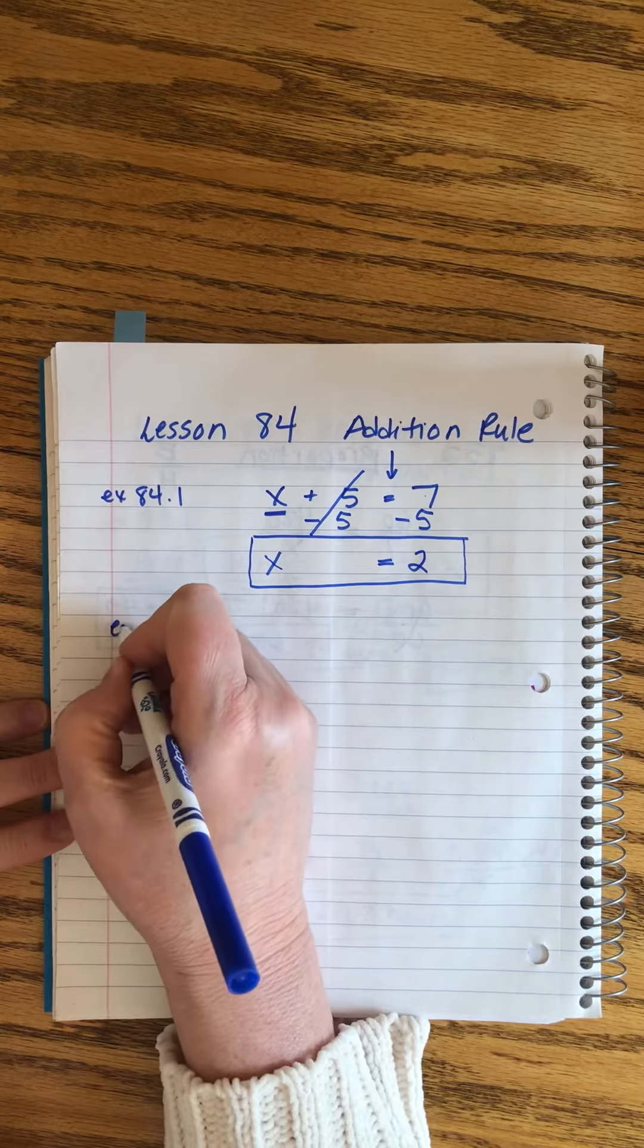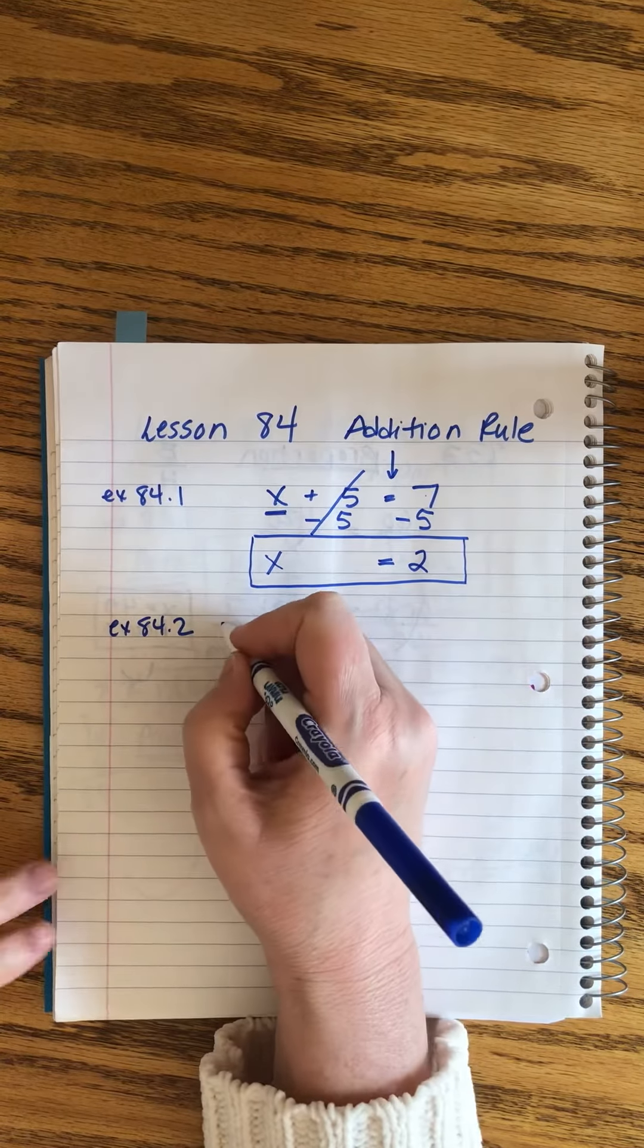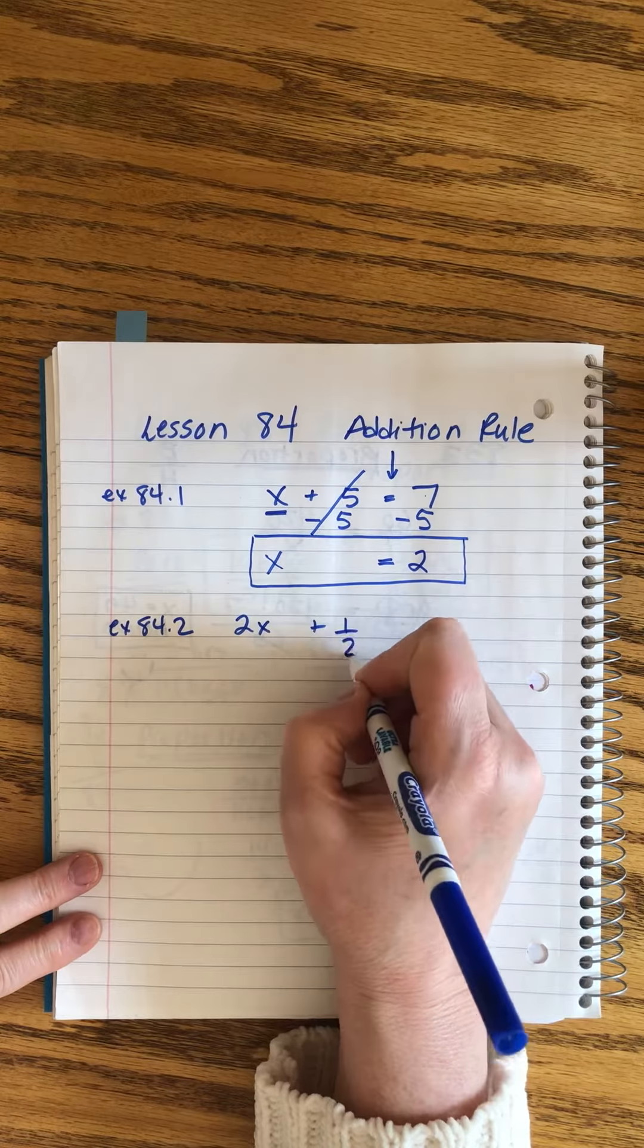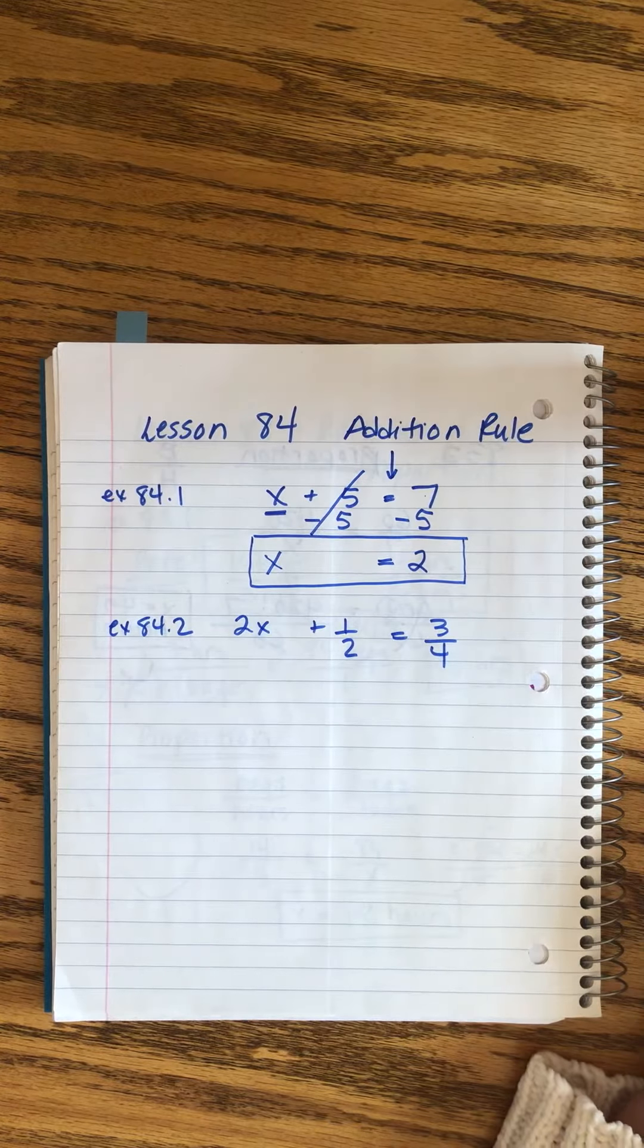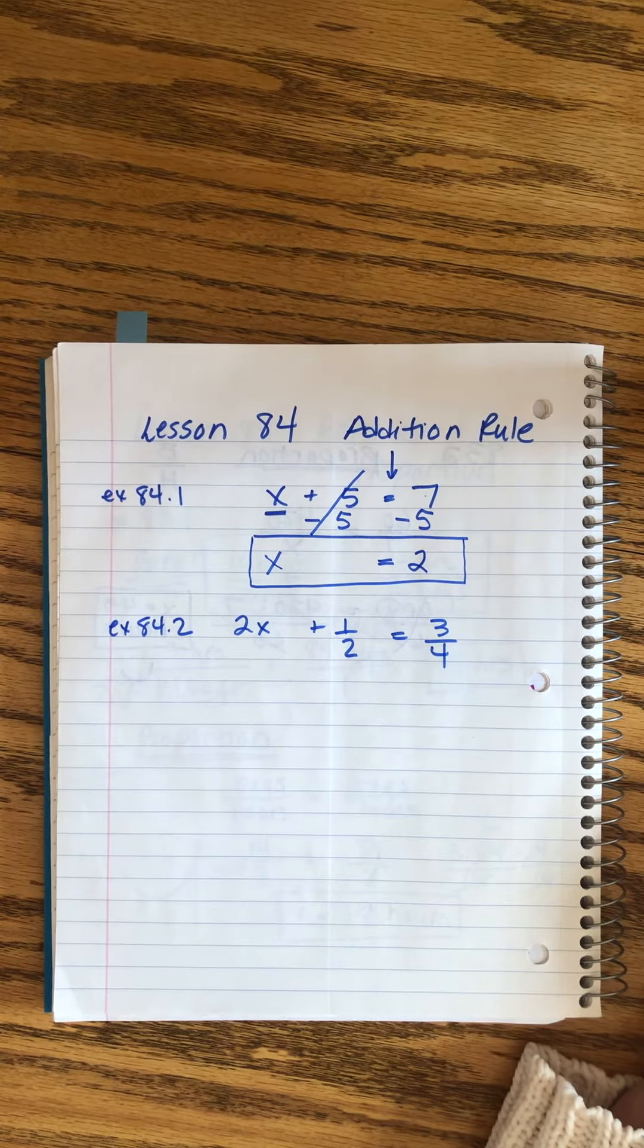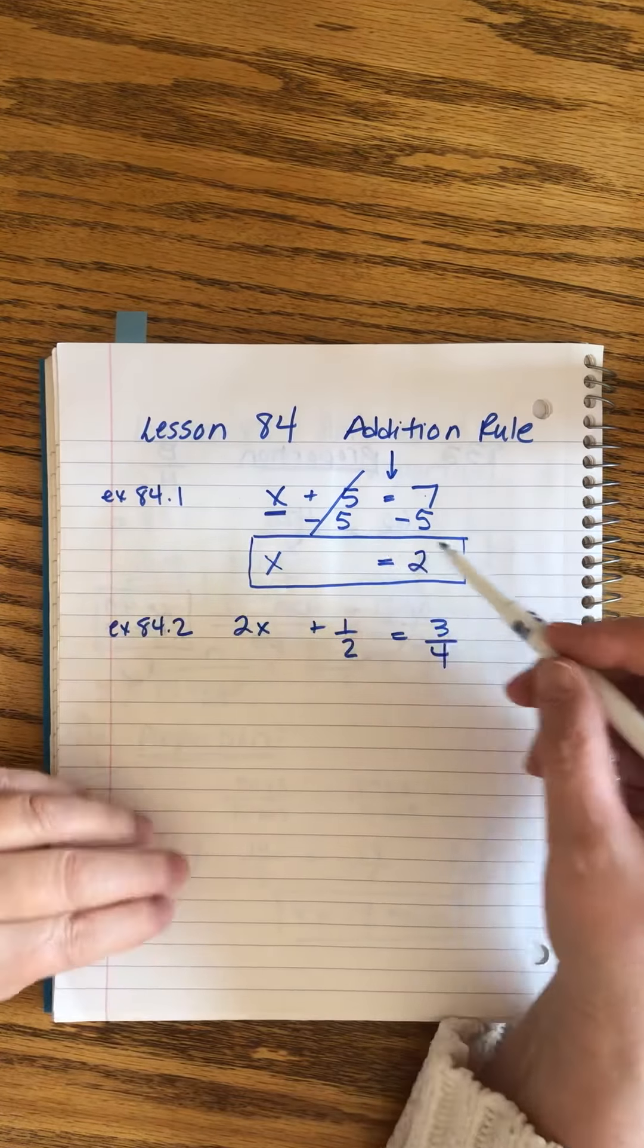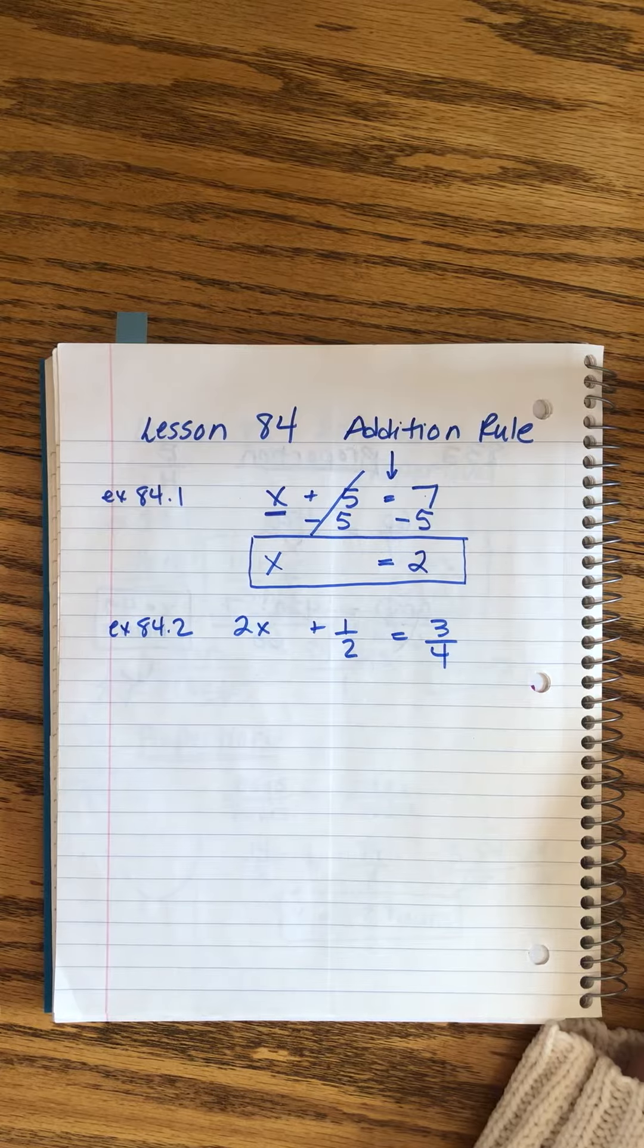Let's make it a little bit harder. Solve 2x plus one-half equals three-fourths. That one I bet is a little bit harder for you to just do in your head really fast. You can still figure it out, I'm sure. But again, we're going to make sure we understand the steps because then you can solve any equation.